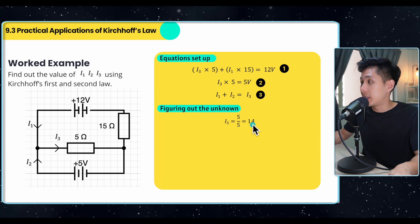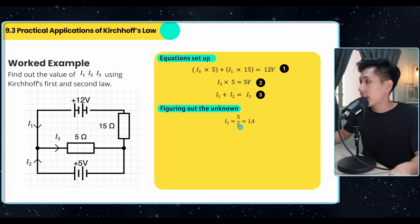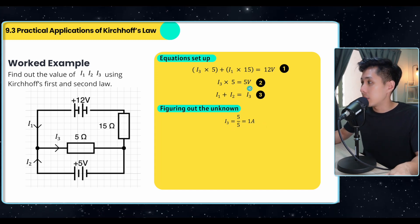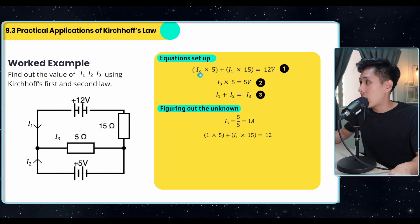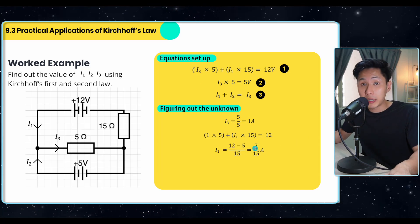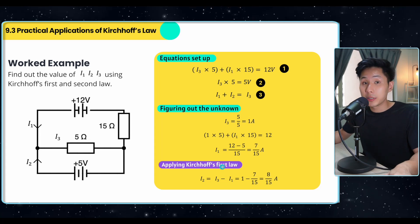So after all the equations have been derived, then we can slowly figure out each of the unknown. I3 is the simplest. I3 is equal to 1 ampere using equation 2. So after we find out the value of I3, we can substitute it into equation 1, which will give us the unknown value of I1, which is 7 over 15 ampere. We can find out what's I2 using first law.